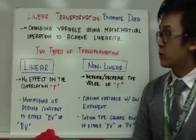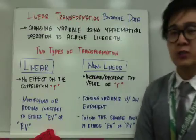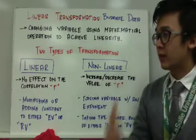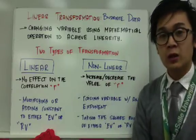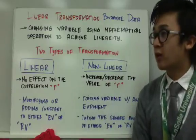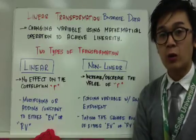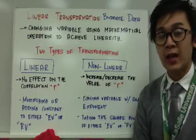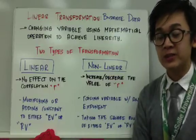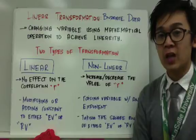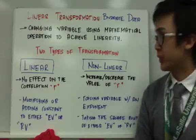Later on in this presentation, we'll be working on bivariate data and we're going to see how we can achieve linearity given a scatter plot that is not straight or not linear.